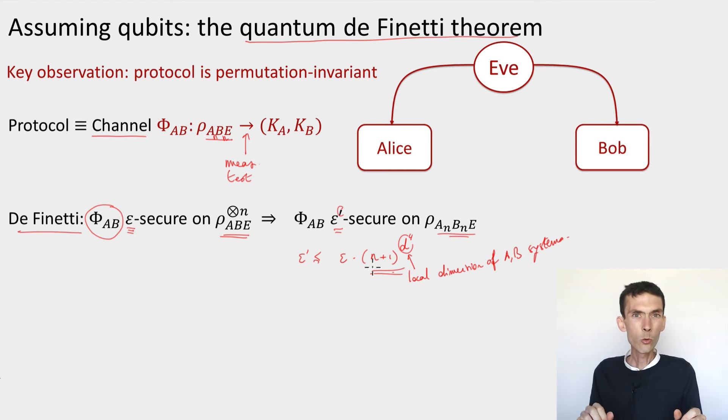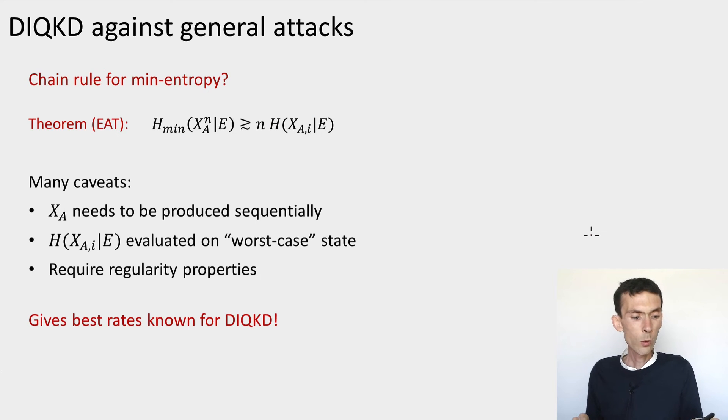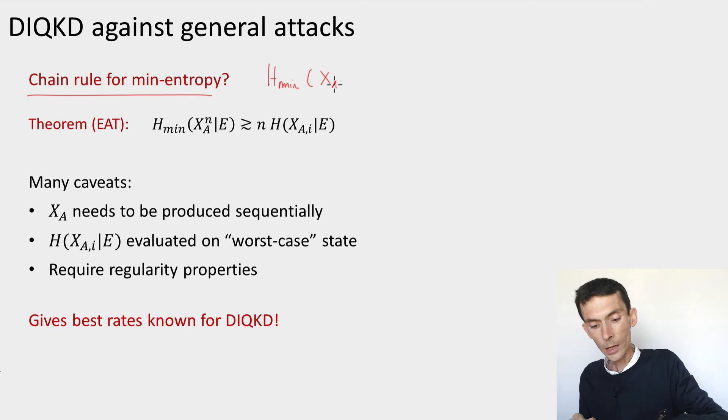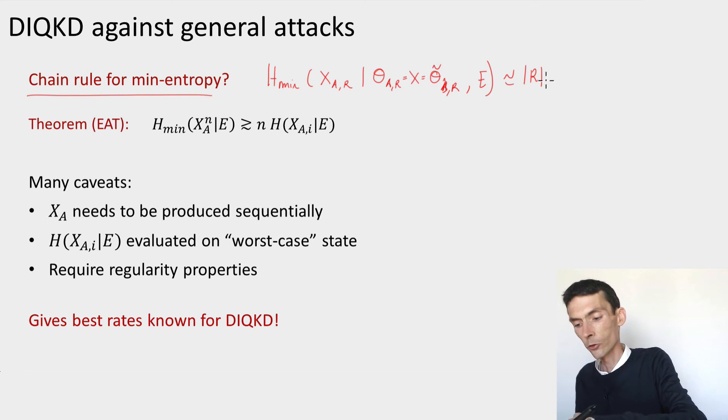Let me tell you about a tool that we can apply in the device independent case. So as we already discussed, what we really want is a chain rule, some kind of a chain rule, something that would replace additivity. Our ideal scenario would be if we can say that the min-entropy of X_A restricted to those key rounds conditioned on the correct basis choices being made by Alice and Bob, and the side information we'd like to say that this is approximately the number of rounds that are used for the raw key times the min-entropy for just one of these rounds.